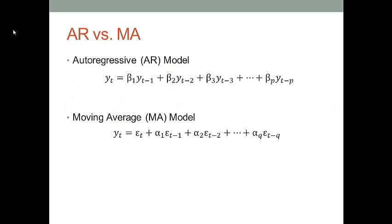Before we talk about the example, let's have a quick review of the AR and MA models. If you look at the AR model, this model assumes that the current value is dependent on the values that happened in the previous days. Because of this assumption, we can build a linear regression model between the value of the current day and the values that happened in the previous days.